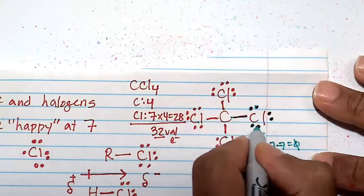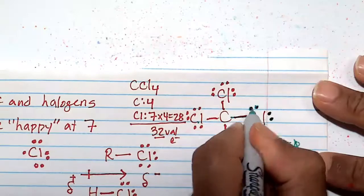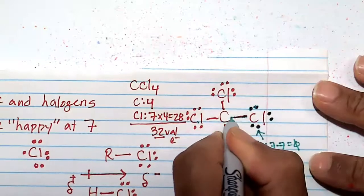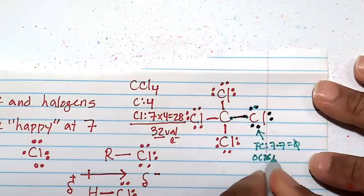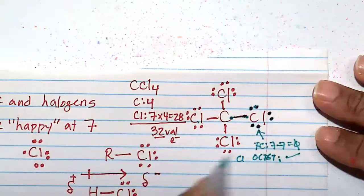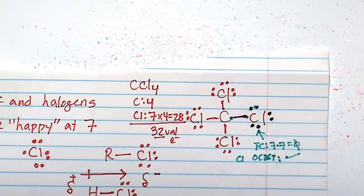Octet rule for the chlorine, 1, 2, 3, 4, 5, 6, 7, 8. So the octet rule for the chlorine is 8, which is fine. Remember, there's a lot of exceptions to the rule. Remember, we saw previously that hydrogen has an octet of 2.